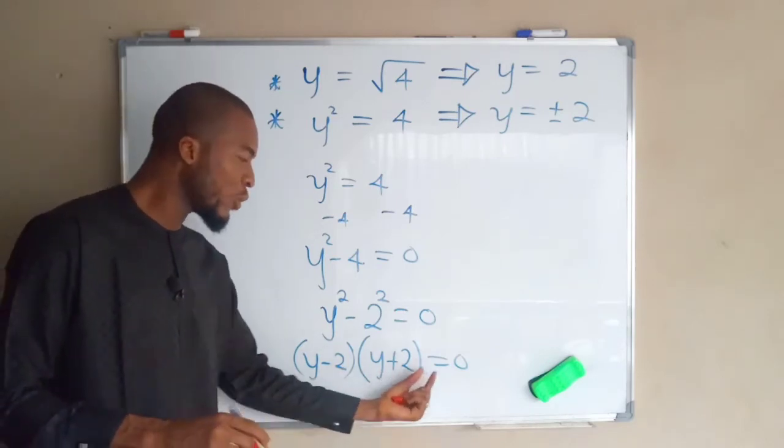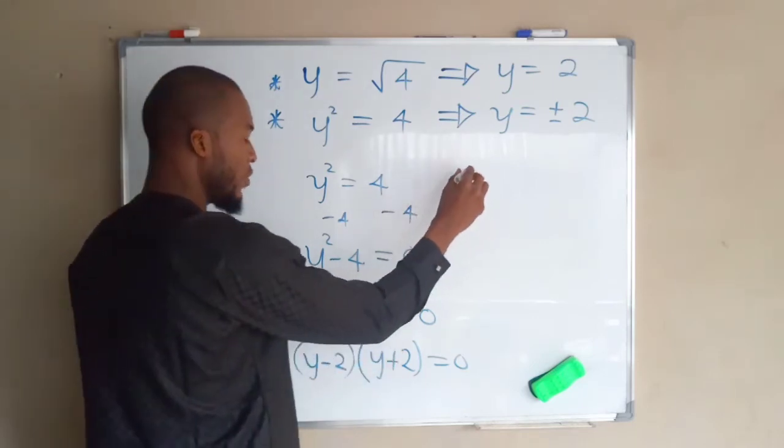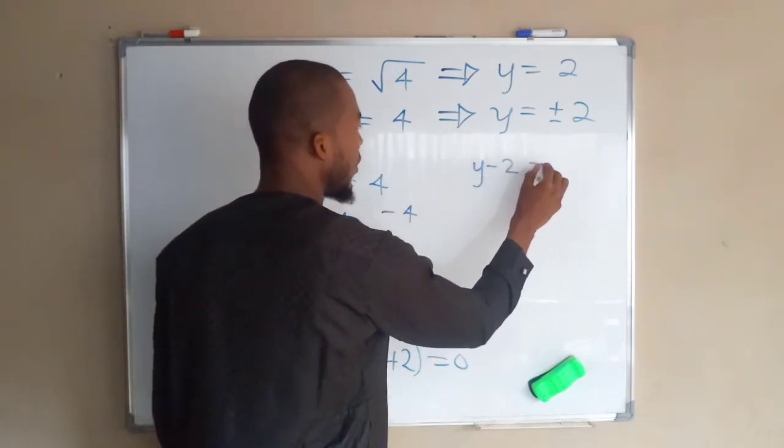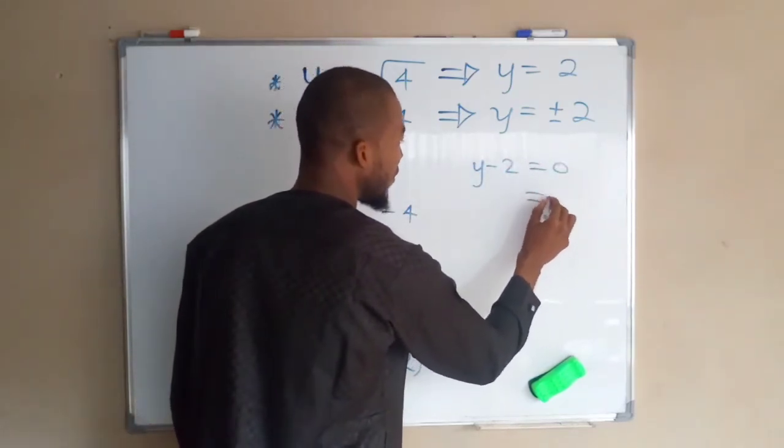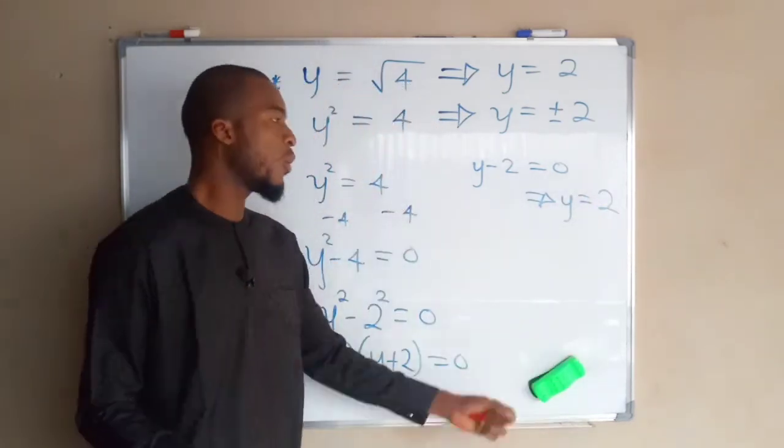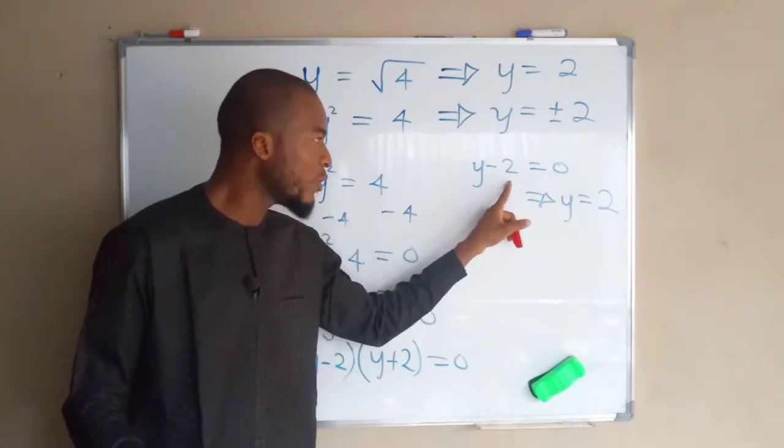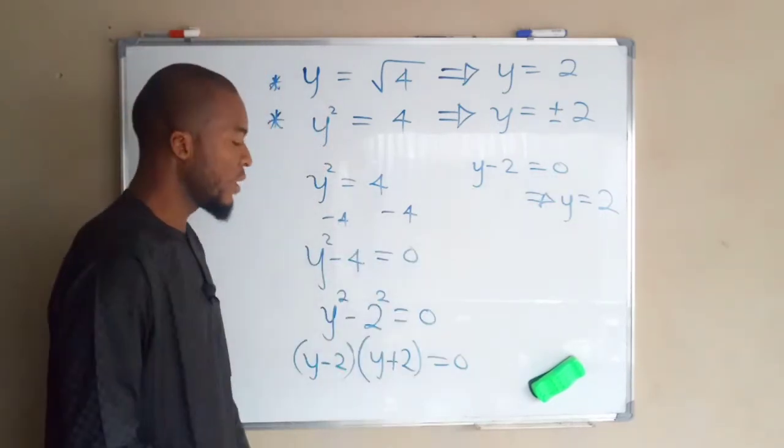We now have two factors which we can set each one of them to be equal to zero. If you set the first one to be equal to zero, y minus two equals zero. This implies that y equals positive two, because it is only when y is equal to two that two minus two will be zero.